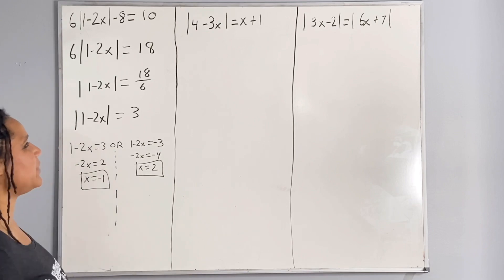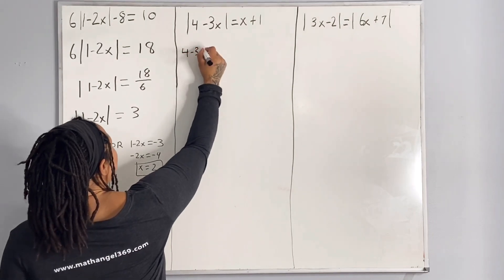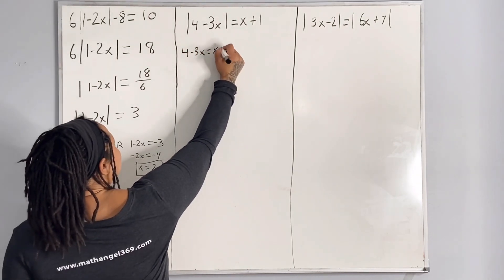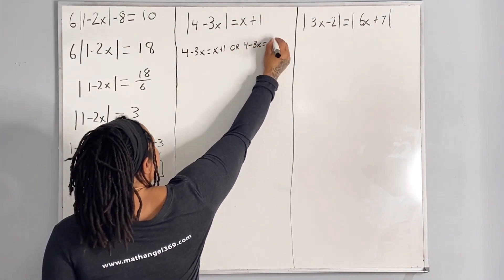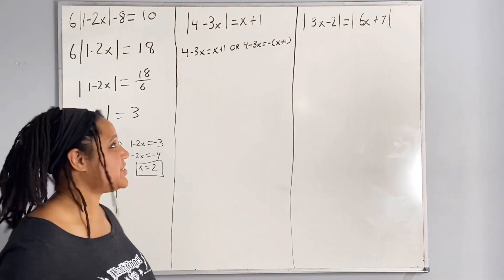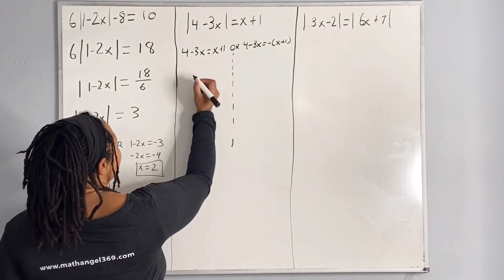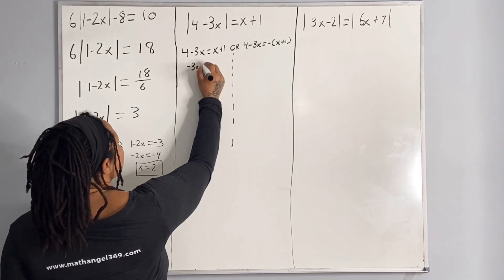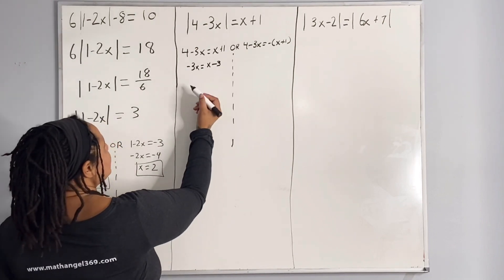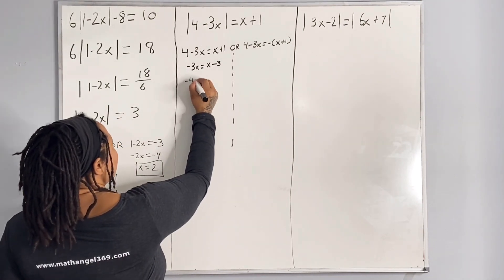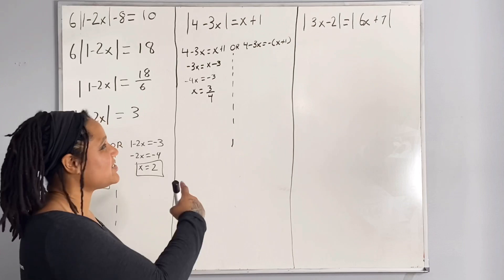Now let's look at our second problem. We are going to apply the same rule. So we're going to say 4 minus 3x is equal to x plus 1, or 4 minus 3x is equal to negative x plus 1. Solving the first one: subtracting 4 from both sides, we get negative 3x is equal to negative 3, which means x is equal to 1.